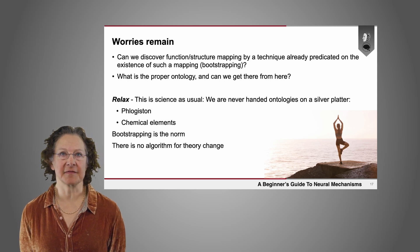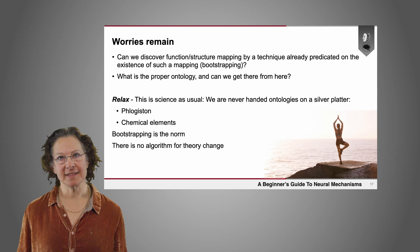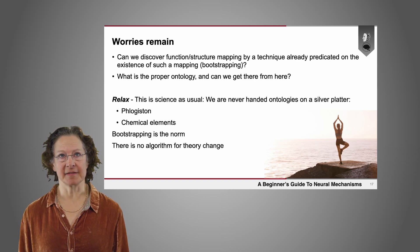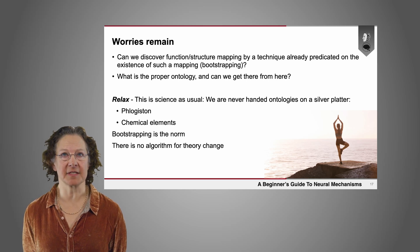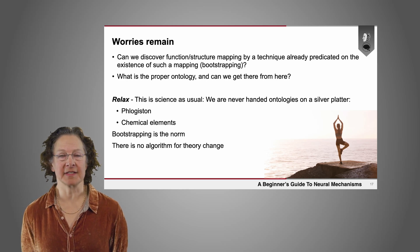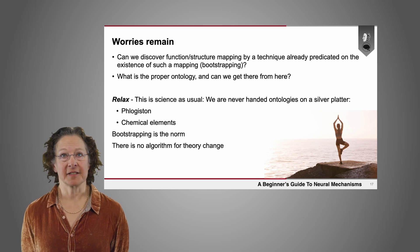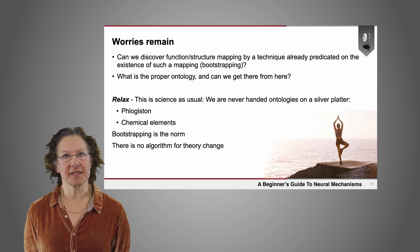Despite neuroscientific experiments showing activity in area F given a certain cognitive task, where one theory predicts activity in that area and another doesn't, that's not to say the question has been completely settled. Worries still remain. For instance, can we discover function-structure mappings by a technique that's already predicated on the existence of such a mapping? There would have to be some way of bootstrapping our knowledge on the basis of earlier evidence to get later, more precise evidence. There's also a question about whether we can reach the proper ontology of cognitive functions through our current techniques. These are actually pretty severe worries.